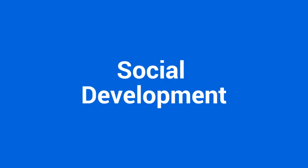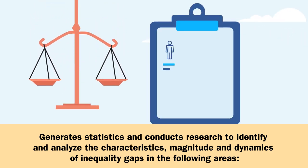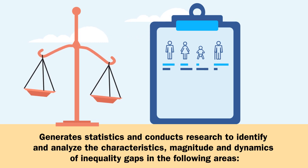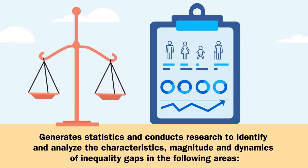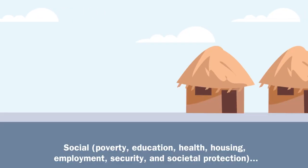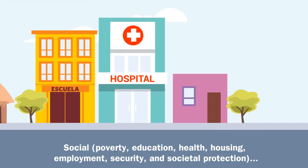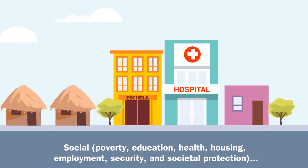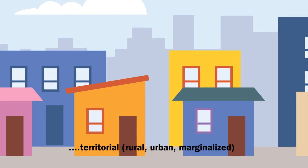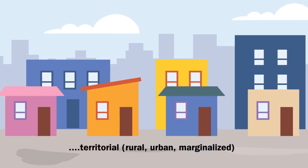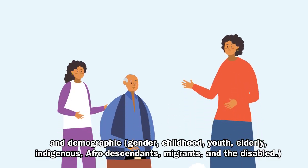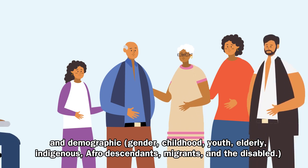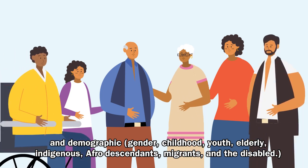Social Development generates statistics and conducts research to identify and analyze the characteristics, magnitude, and dynamics of inequality gaps in the following areas: social poverty, education, health, housing, employment, security, and societal protection; territorial, rural, urban, and marginalized; gender, childhood, youth, elderly, indigenous, Afro-descendants, migrants, and the disabled.